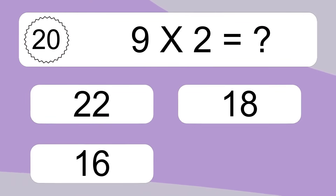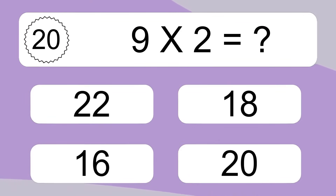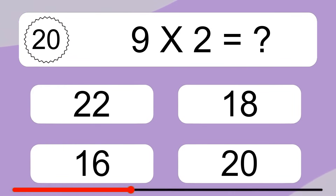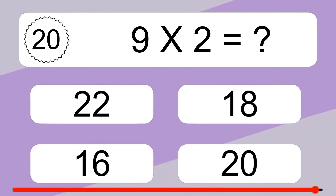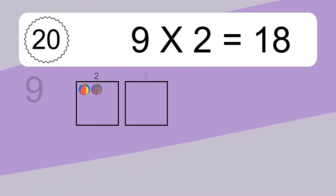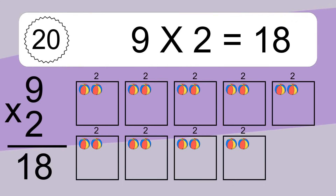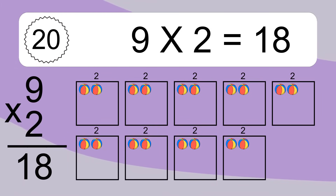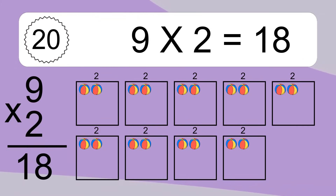9 times 2 equals what? 9 times 2 equals 18. We have 9 boxes and each box has 2 colorful balls inside. If you count all the balls in all the boxes together, you will have 9 times 2 balls. This equals 18 balls.